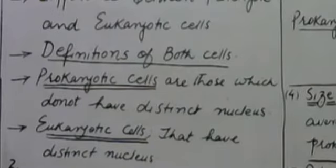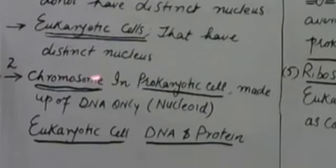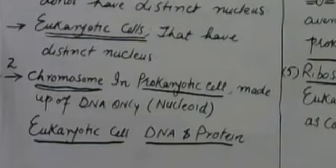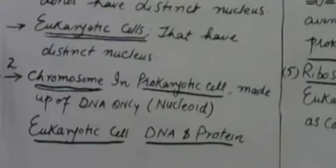Another difference is the chromosome. In the prokaryotic cell, the chromosome is made up of DNA only — just and just DNA. In eukaryotic cells, the chromosome is made up of DNA and protein.